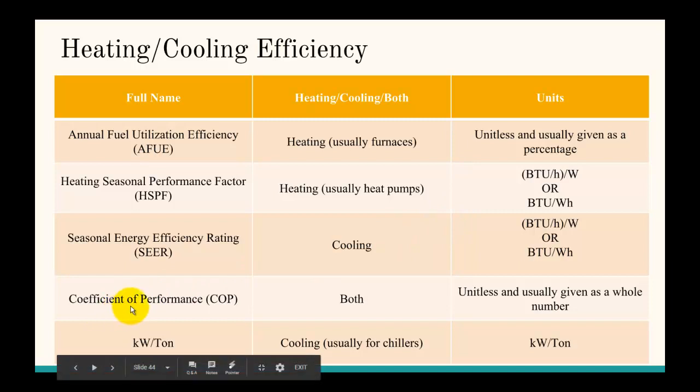The coefficient of performance is unitless, and it's still output over input. Usually it's something like a chiller or a process. Usually we have a COP greater than one because we're not creating heat, so we can have an efficiency greater than one. They probably did this so it's usually given as a whole number and doesn't look like you have an efficiency of greater than 100%, even though you do.